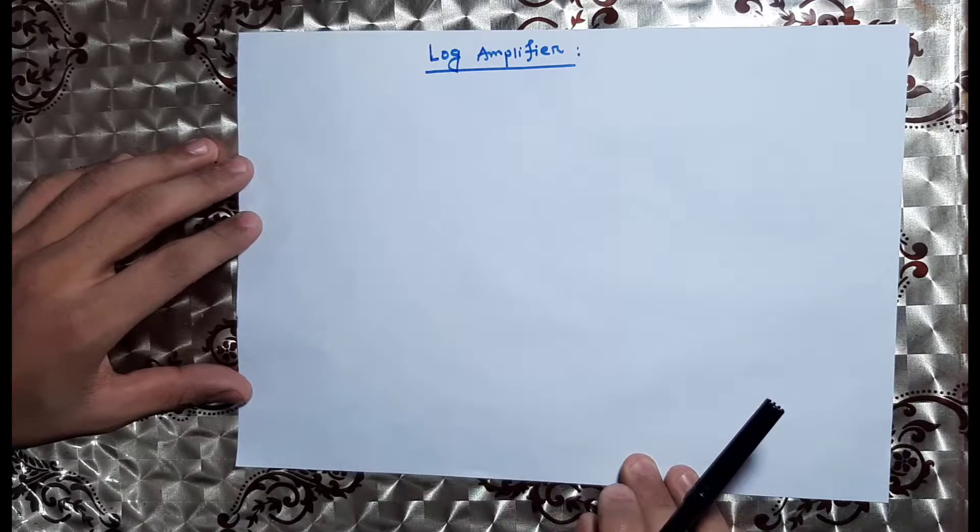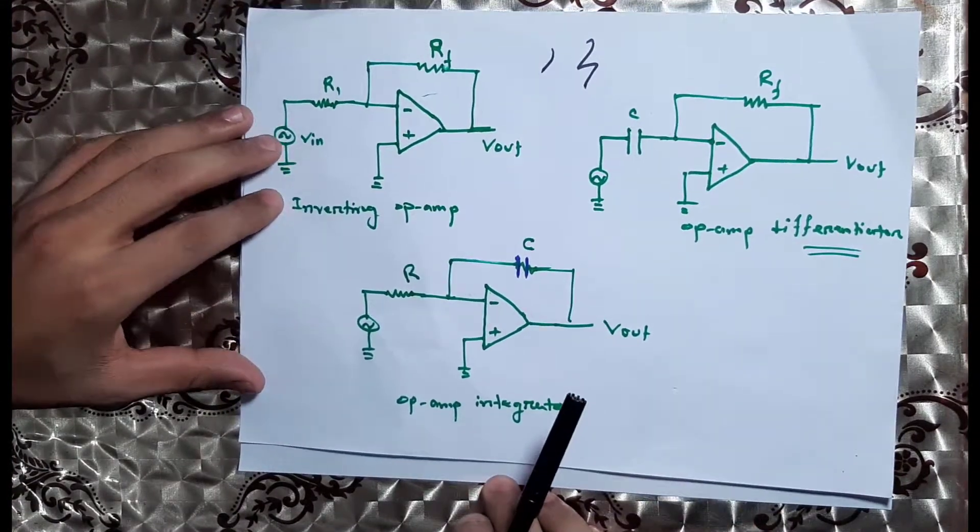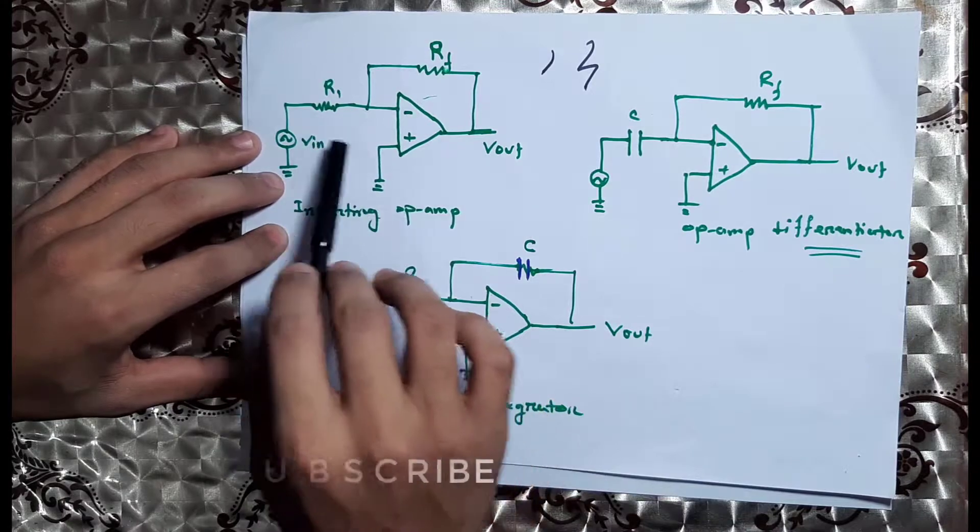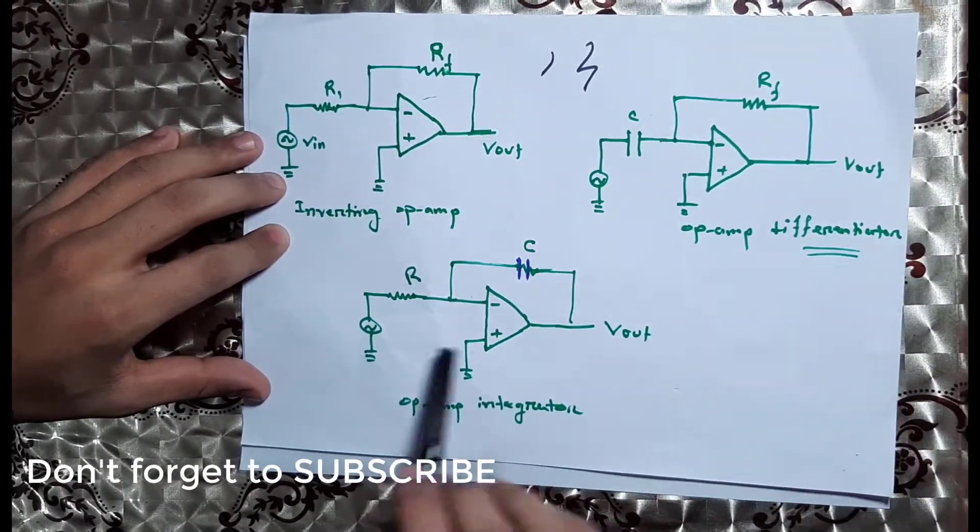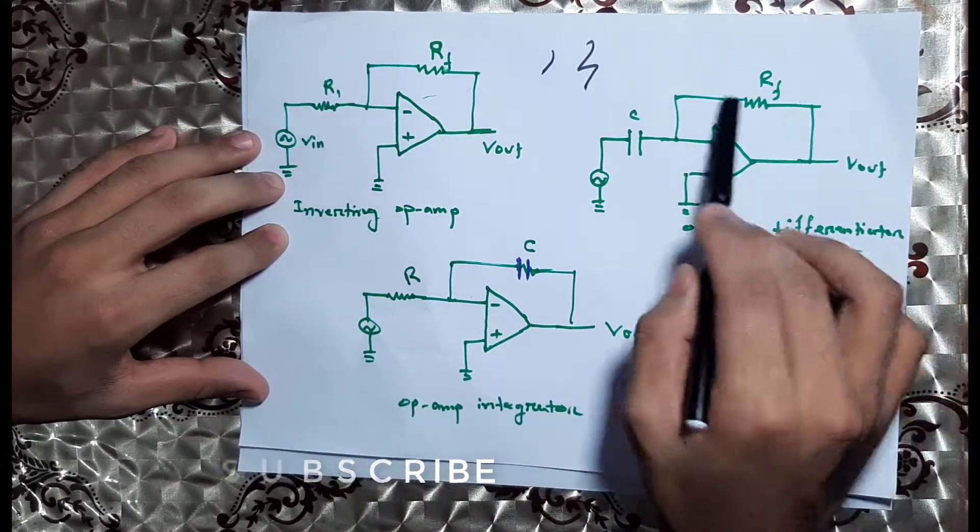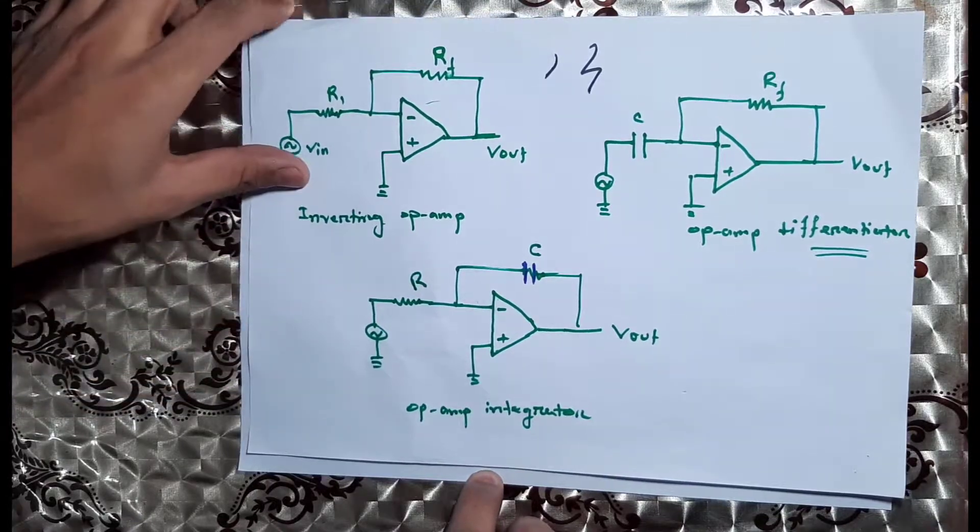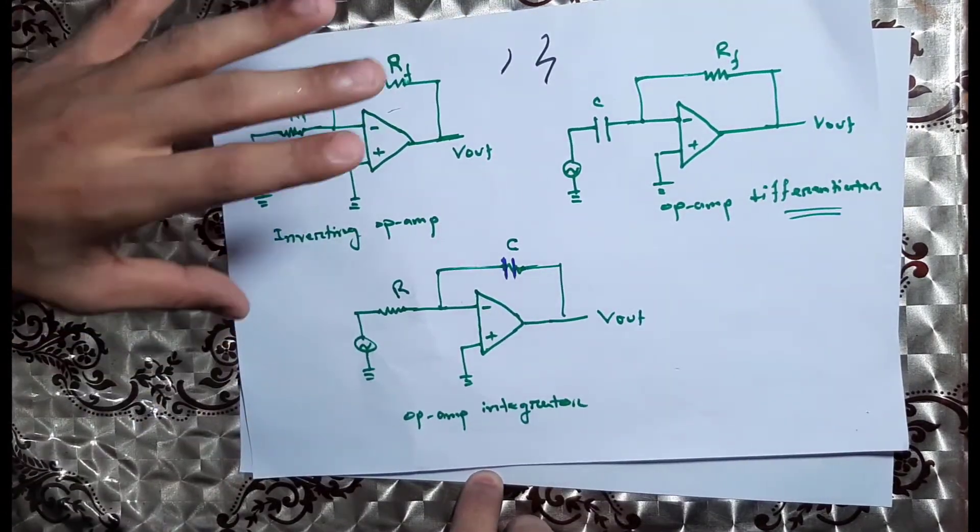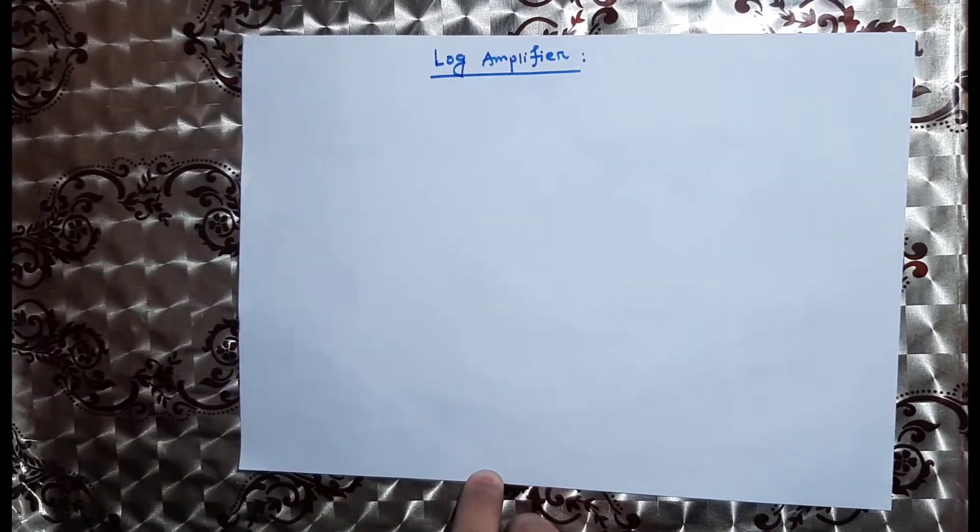In this video, we'll look at the log amplifier. This is the input of the differentiator and integrator. If we just change the circuit, we can see the log amplifier.